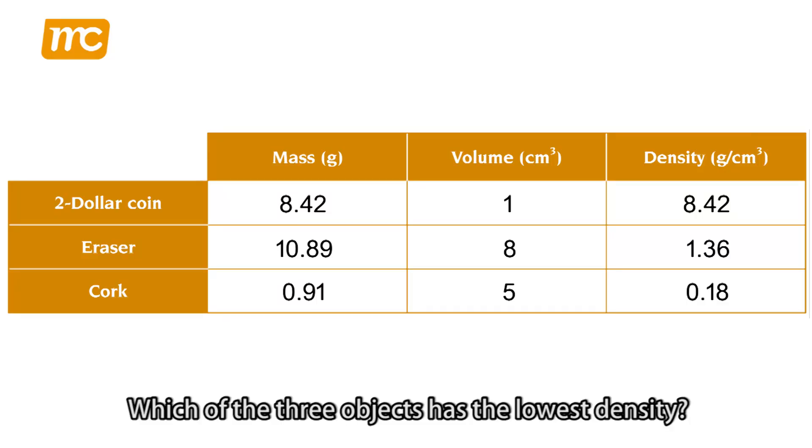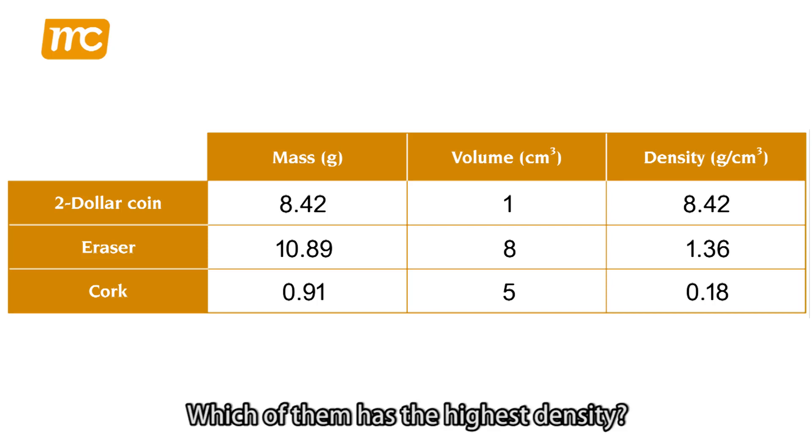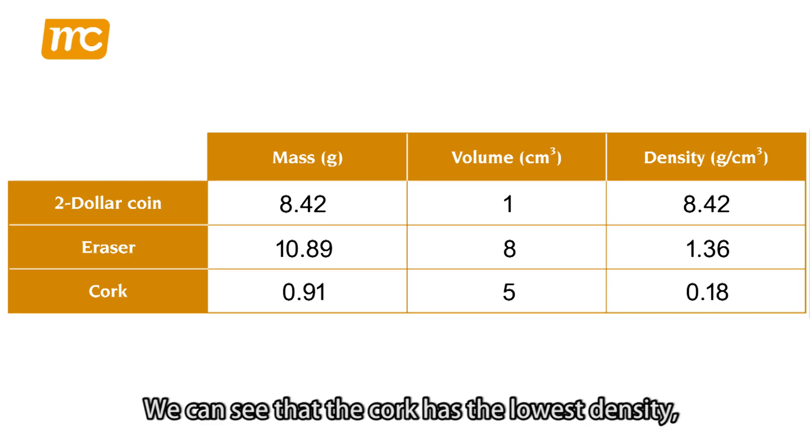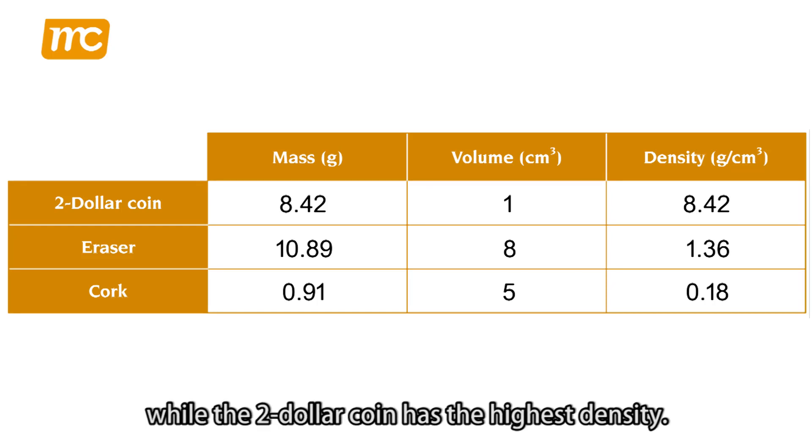Which of the three objects has the lowest density? Which of them has the highest density? We can see that the cork has the lowest density, while the $2 coin has the highest density.